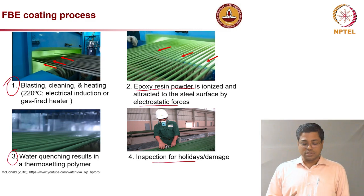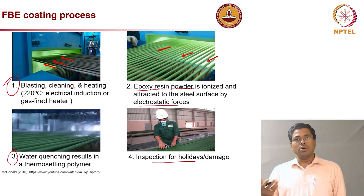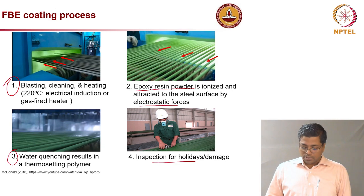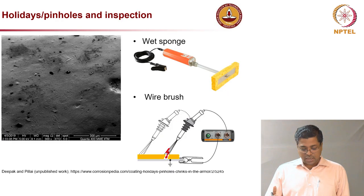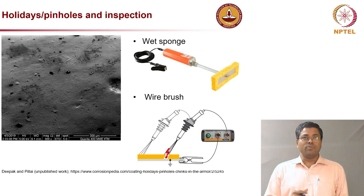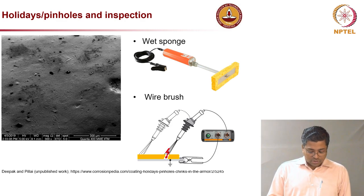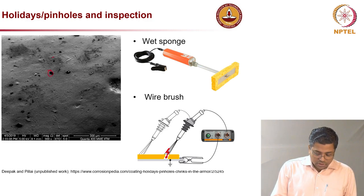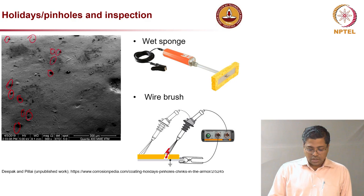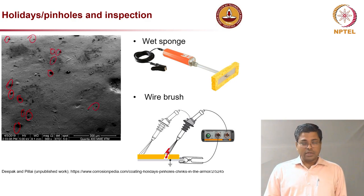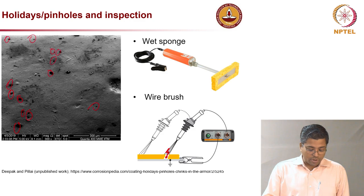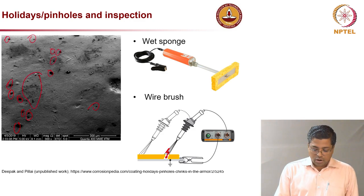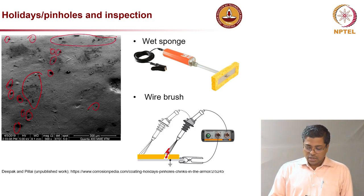When it comes out of the factory the rebar is probably very good, but because of poor handling at site it is sometimes not really practical. A micrograph collected from a steel rebar from a construction site shows many black spots — all holidays or pinholes. A lot of pinholes are present on the steel surface, which will all lead to early corrosion.